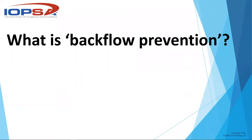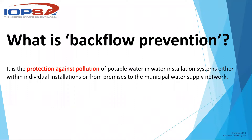Backflow is the protection against pollution - we don't want our potable water coming from the municipality to be contaminated with water downstream that cannot be vouched for. This could apply to an individual house or a whole complex. You could do backflow prevention at the beginning of a townhouse complex or block of flats, rather than putting one in each installation downstream.